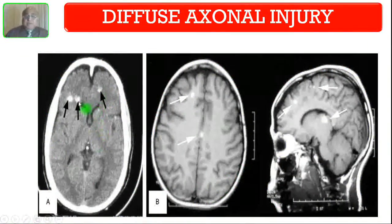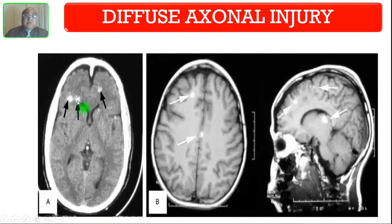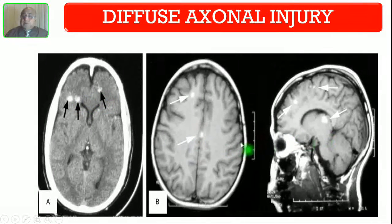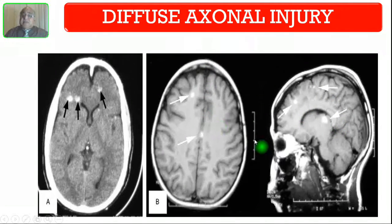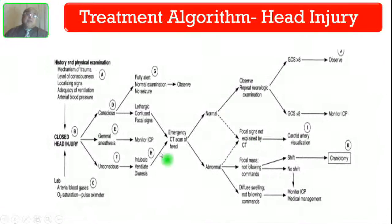Here you are seeing a CT scan showing white punctate hemorrhages — these are the areas of punctate hemorrhage. These two are MRI scans also showing white punctate hemorrhages at the junction of white and grey matter of the brain. This is a case of diffuse axonal injury.